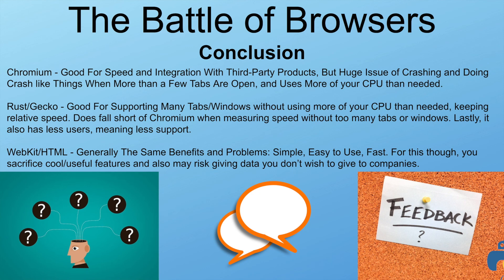In conclusion: Chromium is good for speed and integration with third-party products, but there is an issue of crashing-like behavior when more than a few tabs are open and it uses more of your CPU than necessary. Gecko is good for supporting many tabs or windows without excessive CPU usage and keeping relatively good speed, but falls short of Chromium with few tabs and has fewer users meaning less support. WebKit and HTML offer similar benefits — they are simple, easy to use, and fast — but you sacrifice cool and useful features and may risk sharing data you don't wish to give to companies.